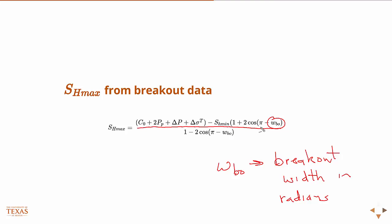It could also be, instead of pi there, if you had 90 degrees, then you could have it in degrees as well. So this is the width of the breakout as observed from some well logging, either caliper or an ultrasonic.